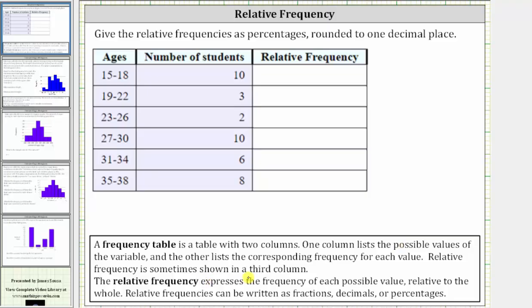Relative frequency is sometimes shown in a third column as we have here. The relative frequency expresses the frequency of each possible value relative to the whole. Relative frequencies can be expressed as fractions, decimals, or percentages.